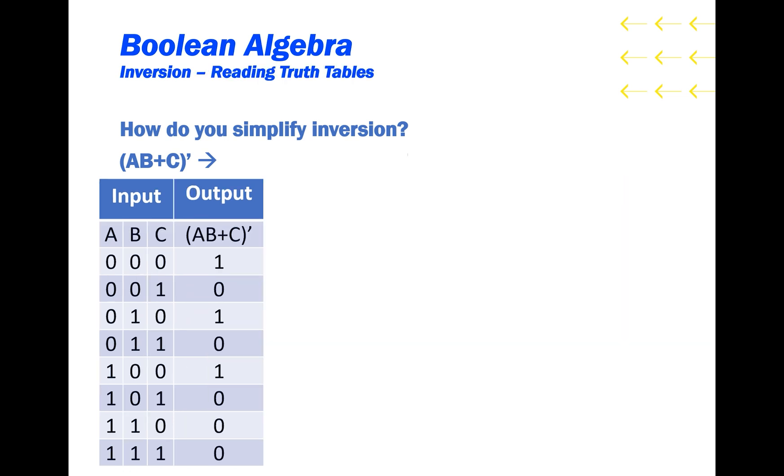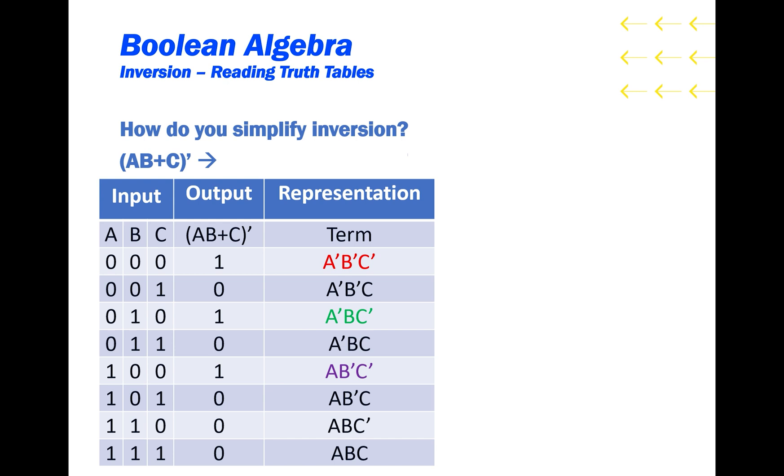Now we just need to construct a logical expression that represents the truth table. And we can do that using terms. Each row of the truth table can be uniquely determined by taking the input terms and combining them with AND gates. For example, if I wanted to output 1 only when A, B, and C are 0, then the term I would use is A prime, B prime, and C prime. This term would only output 1 when all of the inputs are low, and would output 0 otherwise.